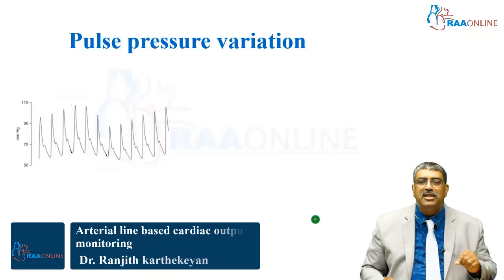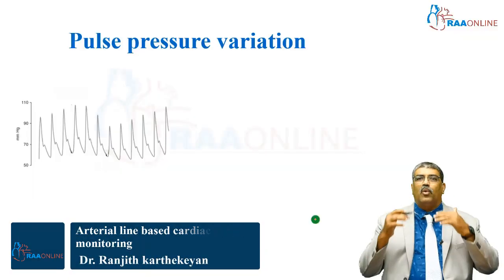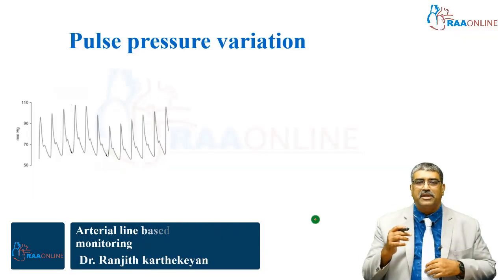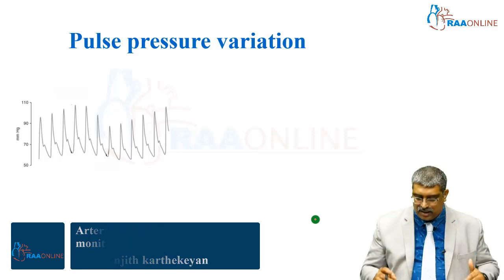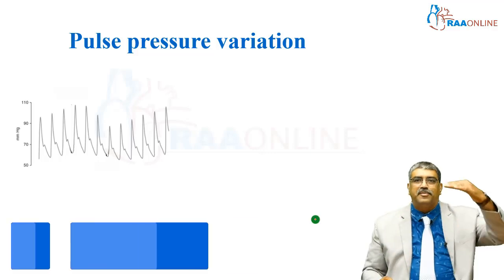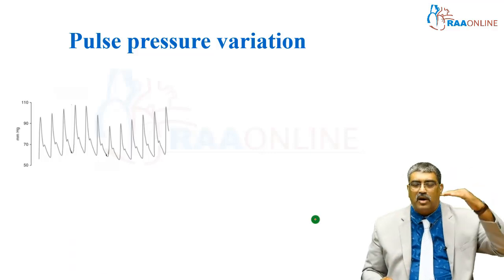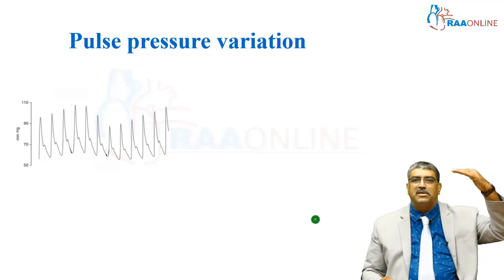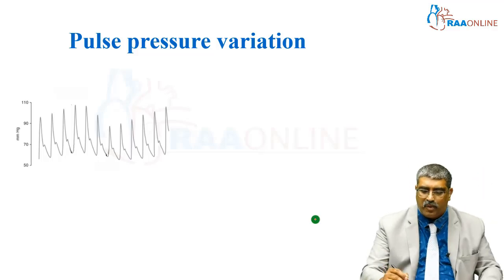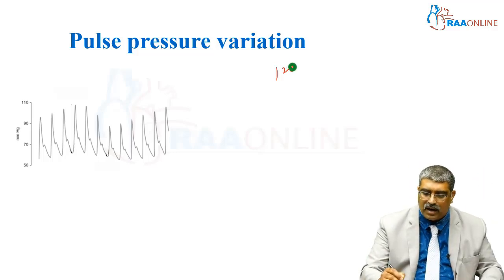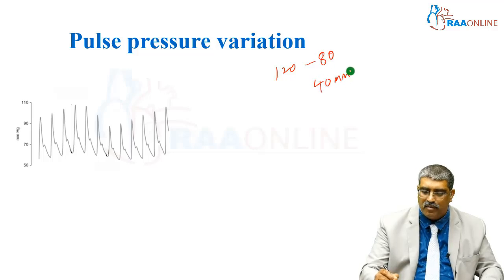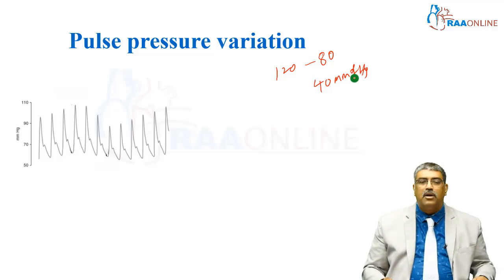Coming to pulse pressure variation. What is pulse pressure? Pulse pressure is nothing but the difference between the systolic and the diastolic pressure. If the systolic is 120 and the diastolic is 80, the pulse pressure is normally around 40 millimeter of mercury. That is the normal pulse pressure.